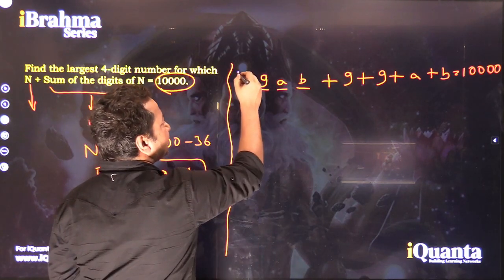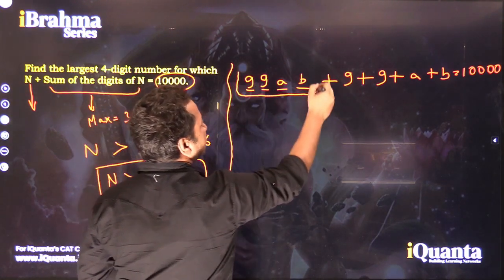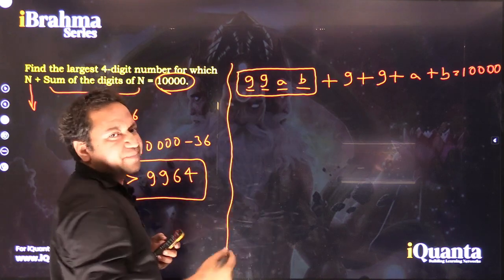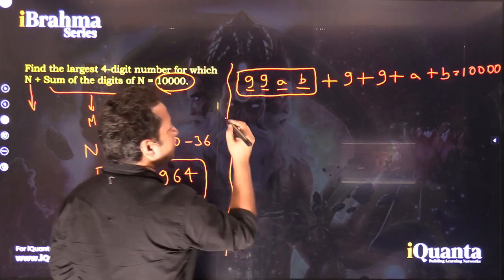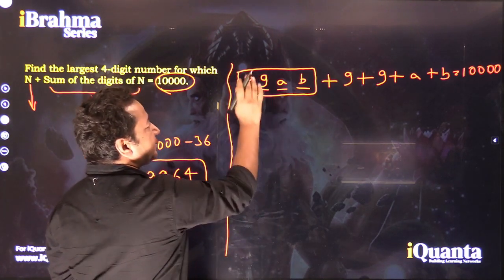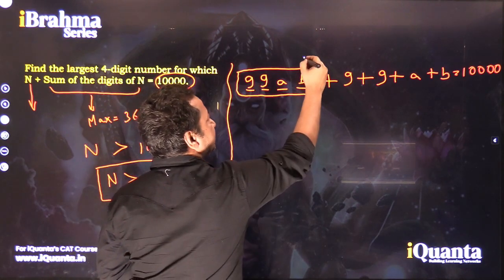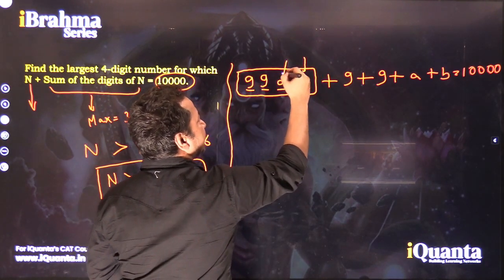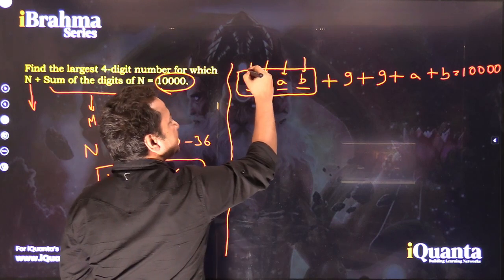Now if I try to expand this number, what do I get? As you can see, this is the units place, tens place, hundreds place, and thousands place.